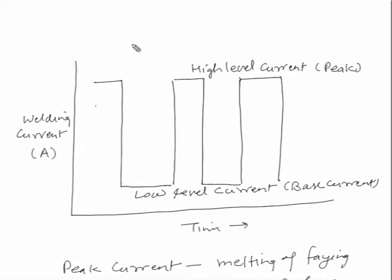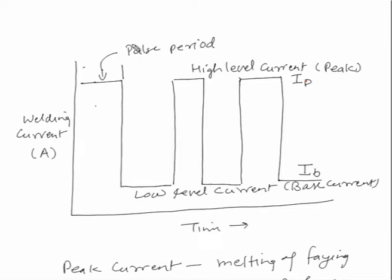The period during which current is high is called the pulse period, and the pulse period decides how long heat will be generated for melting. The duration during which current is low provides the opportunity for solidification of the weld metal. If the duration of the pulse period is more, more heat will be generated and a wider weld pool will be made. If the base current is for a larger duration, the cooling time will be more and less heat will be generated during welding.